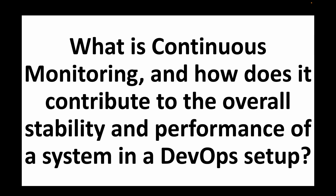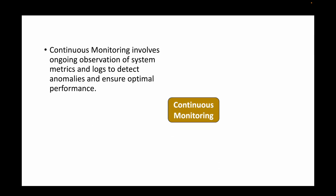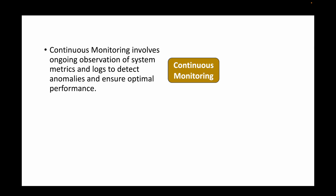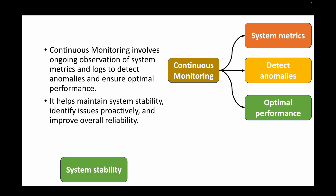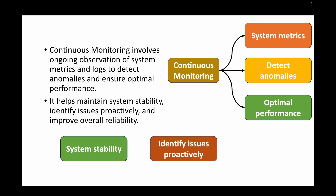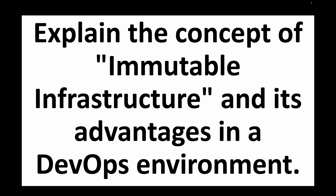The next question is: what is continuous monitoring and how does it contribute to the overall stability and performance of a system in a DevOps setup? Continuous monitoring is an ongoing observation of system metrics and logs to detect anomalies and ensure optimal performance. By continuously monitoring systems and checking for anomalies, we maintain the stability of systems, identify issues proactively, and improve the overall reliability of the application so users have a better experience.